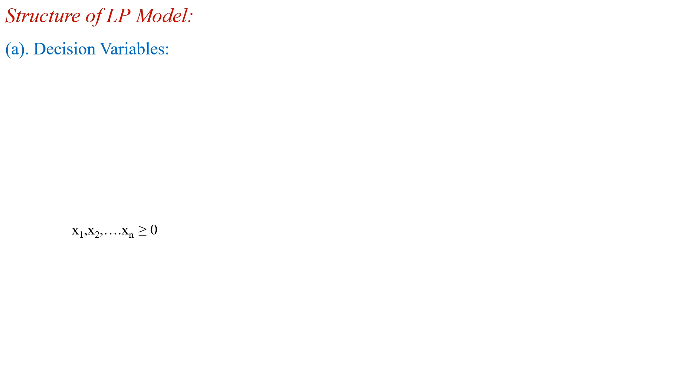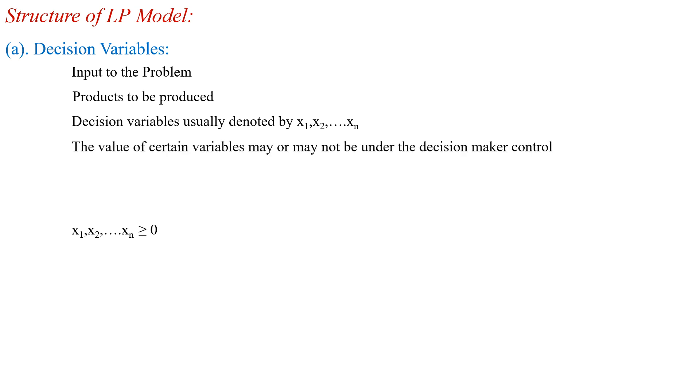First one is the decision variables. Decision variables are the input to the problem and these decision variables can be identified by the company, what are the products being produced. These decision variables are usually denoted by x₁, x₂, ...xₙ. Then, the value of certain variables may or may not be under the decision maker control. If the values are under the control of the decision maker, then such variables are said to be controllable. Otherwise, we are calling these decision variables as uncontrollable.